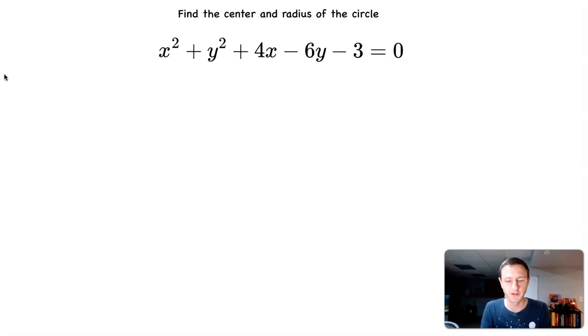In this example, we want to find the center and radius of the circle. We have this crazy-looking equation, x squared plus y squared plus 4x minus 6y minus 3 equal to 0.